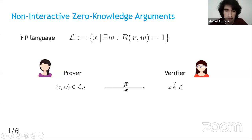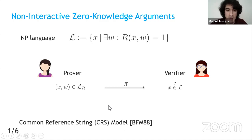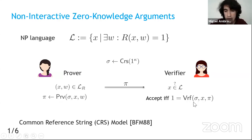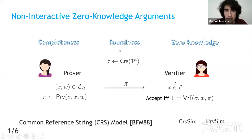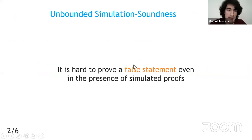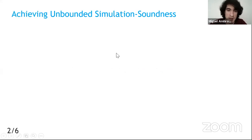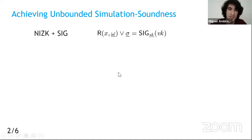In a non-interactive zero-knowledge argument system in the common reference string model, the prover sends a single message to convince the verifier that x is in language L. We focus on unbounded simulation soundness (USS), which says it is hard to prove a false statement even in the presence of simulated proofs — this implies non-malleability. Achieving USS typically requires combining the NIZK with a signature-like primitive.